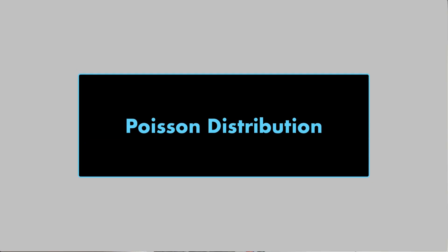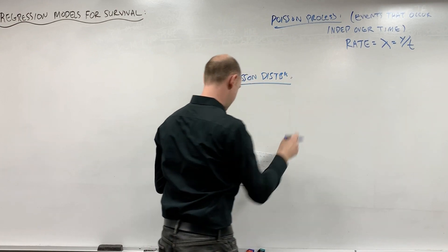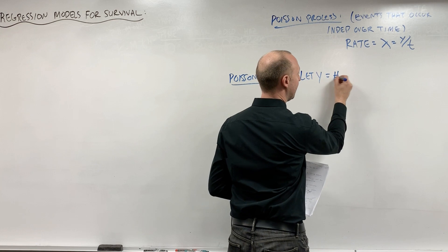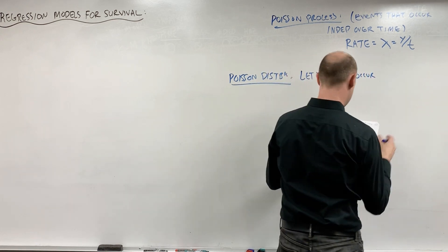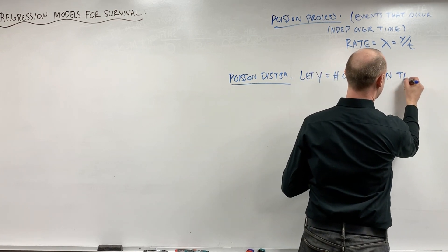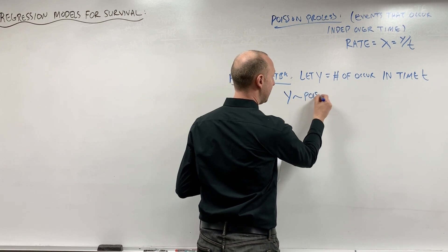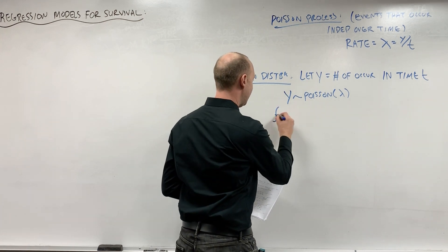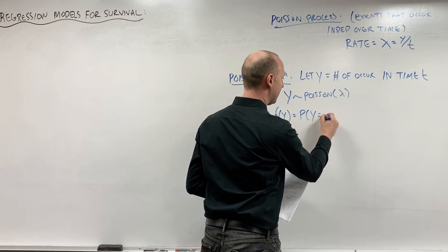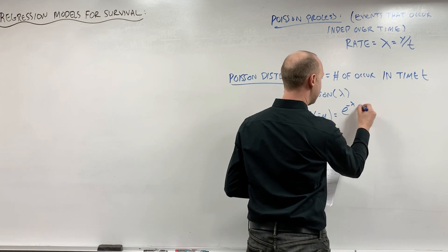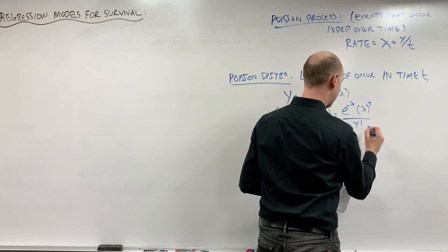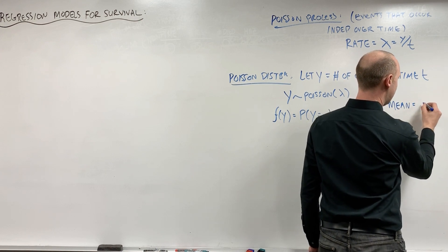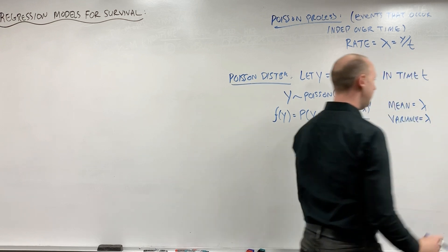The first is the Poisson distribution, or the Poisson random variable. We let y be the number of occurrences of the event in time t, and we say y follows a Poisson distribution with parameter lambda. The probability that y equals little y works out as e to the negative lambda, times lambda to the power of y, over y factorial. The Poisson distribution also has the feature that the mean is equal to the rate, and the variance is also equal to lambda.